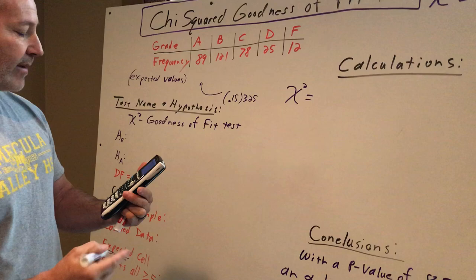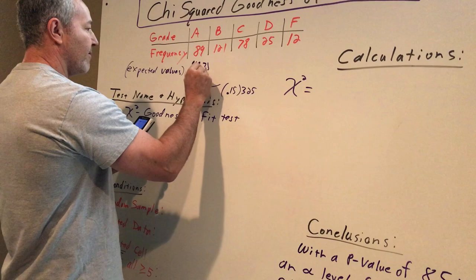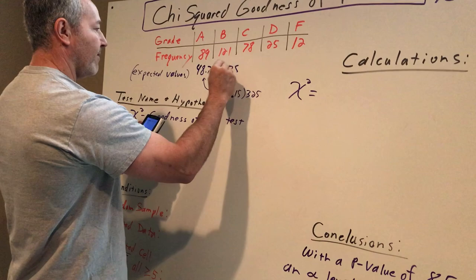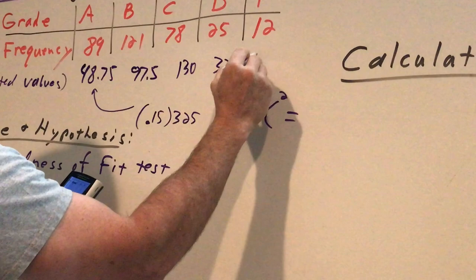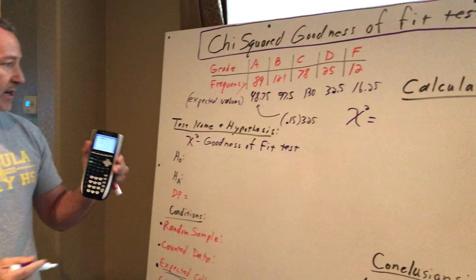This is 48.75. Notice it's not an integer value, and that's fine. This is 97.5, 130, 32.5, and 16.25. And now I'd go ahead and enter those in column two, which I've already done here.